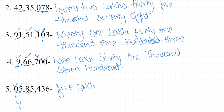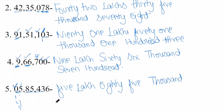Can you write all your numbers now? 85,436. Can you complete it? The answer is 85,000, 400, 36 — so eighty-five thousand, four hundred and thirty-six.